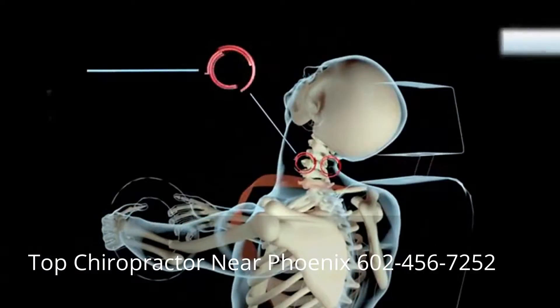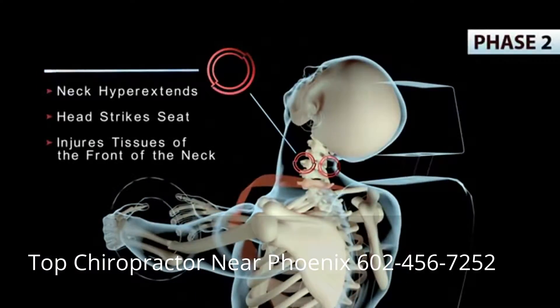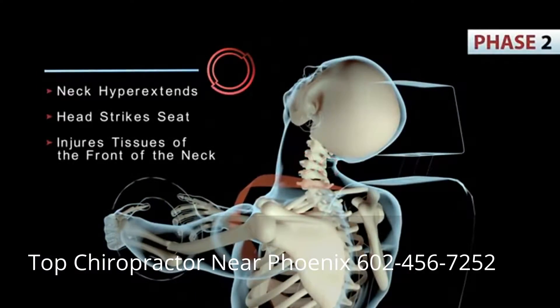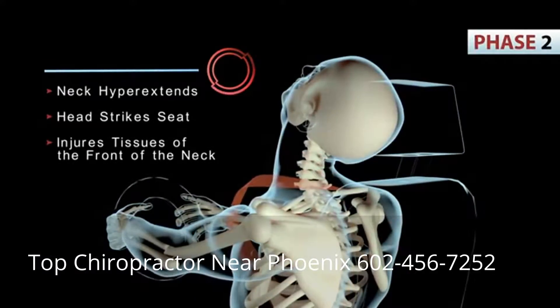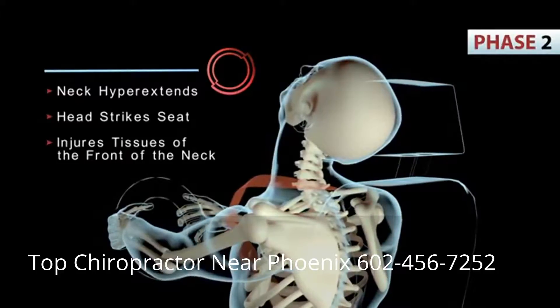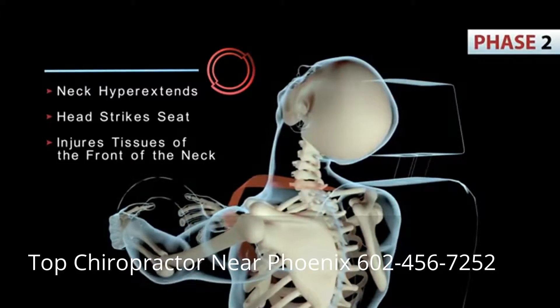In phase two, the neck hyperextends and the head strikes the seat. This causes injury to the tissues at the front of the neck.